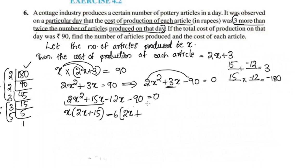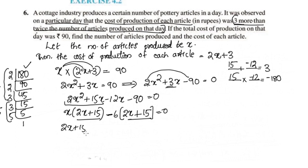Factorizing the quadratic equation, we get 2X plus 15 multiplied by X minus 6 is equal to 0.